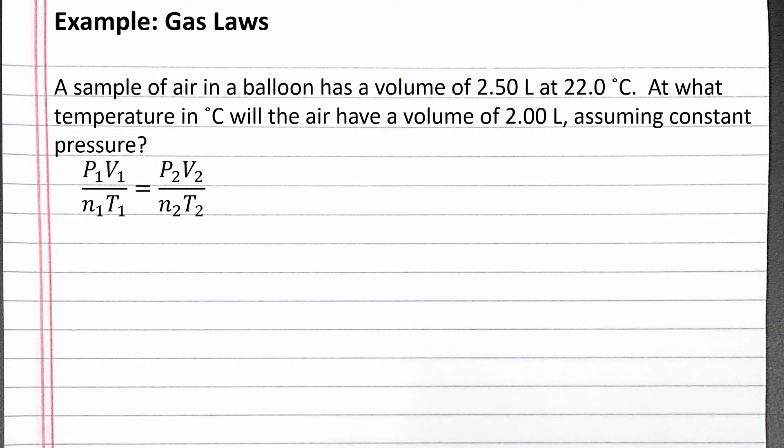P is pressure, V is volume, N is moles of gas, and T is absolute temperature in Kelvin. Any variable for a sample of gas that does not change can be crossed out of the equation.